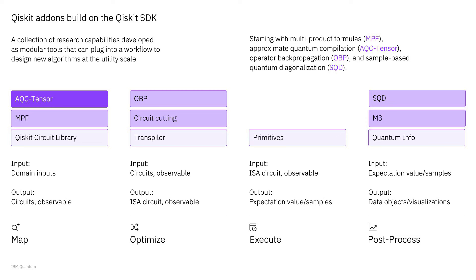This is why we launched Qiskit add-ons — a collection of research capabilities developed as modular power tools that can plug into a workflow to design new algorithms at the utility scale. Earlier this year we introduced three add-ons: multi-product formulas, operator backpropagation, and sample-based quantum diagonalization. This week we're releasing a fourth add-on called Approximate Quantum Compilation, or AQC Tensor — a tool that uses tensor networks to help map your problem directly to lower-depth circuits for execution on hardware. These tools are modular so you can integrate them without restructuring your pipeline.